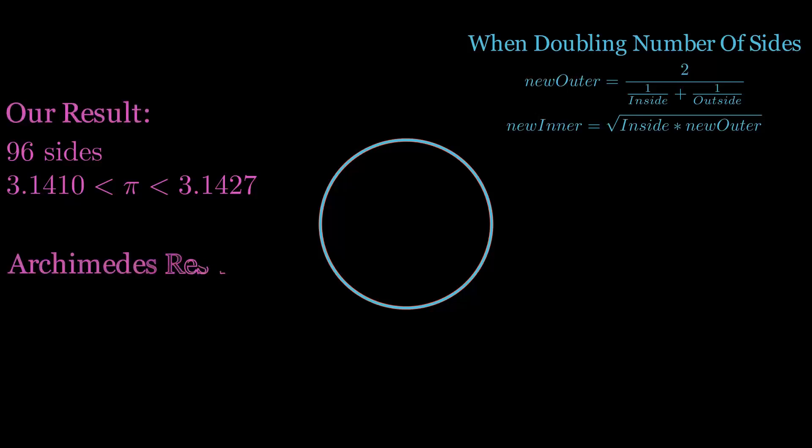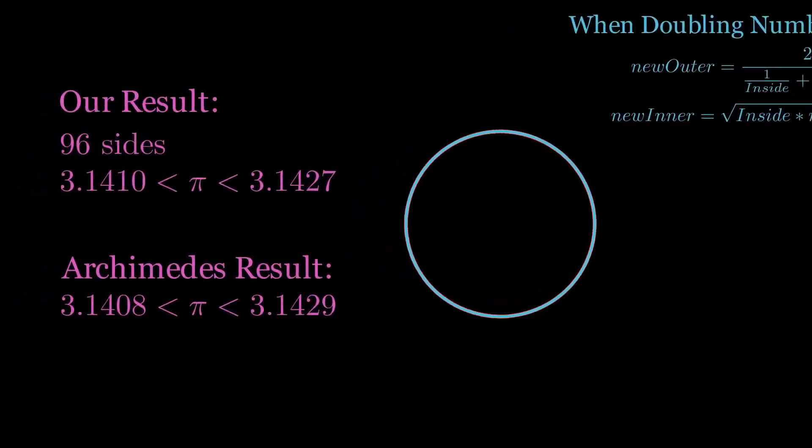His final proof was that pi is greater than 3 plus 10 divided by 71, but less than 3 plus 10 divided by 70. We get a slightly different answer because Archimedes approximated his square roots, which we didn't have to do.